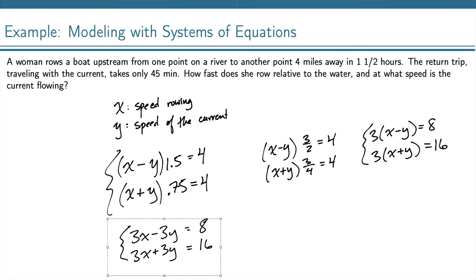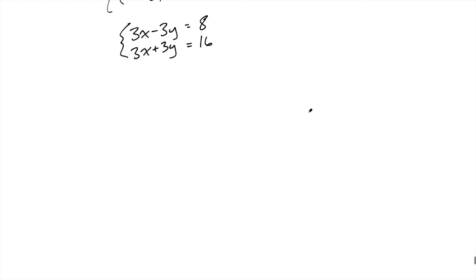We can do a quick elimination by adding these two equations. The y terms will cancel and we end up with 6x equals 24. Then we divide by 6 and get x equals 4.